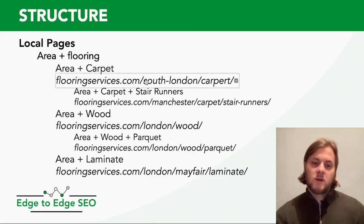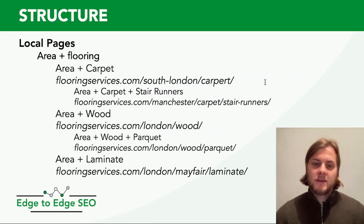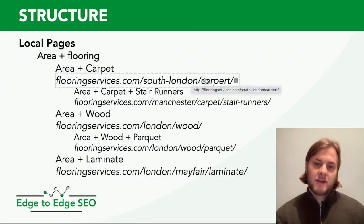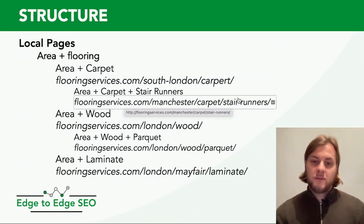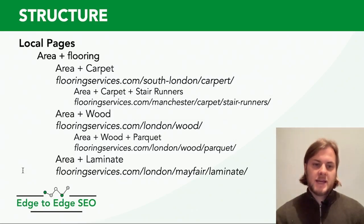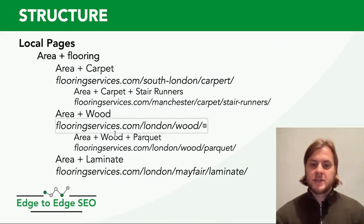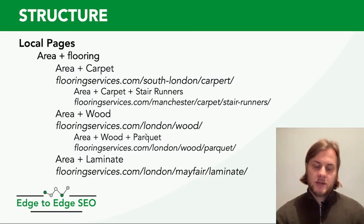You'd go floorandservices.com/south-london/carpet. From a user's point of view, when they land on that page they know you're offering carpet services in the South London area. If you wanted to target stair runners specifically, your URL structure might look like floorandservices.com/manchester/carpet/stair-runners. Similarly, for wood flooring in London it would be floorandservices.com/london/wood, and you can go deeper into sub-services from there.